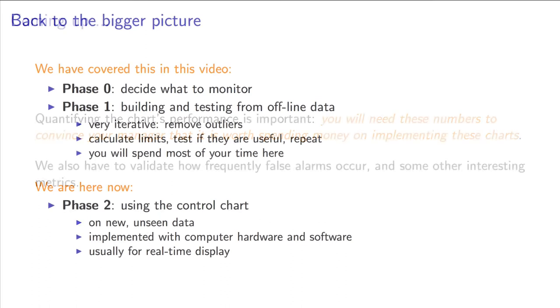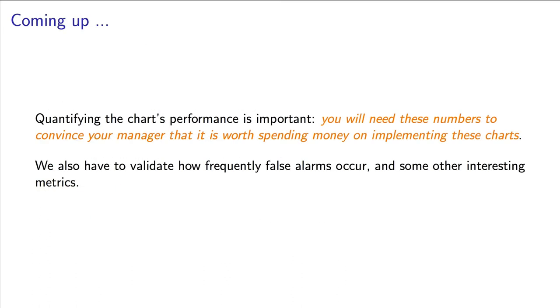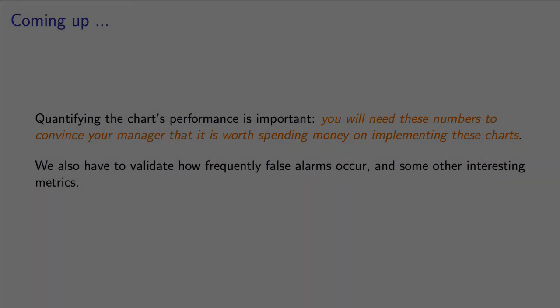Now in the next video, we're going to show how we can judge whether this chart performs well or not. How many times do we get a false alarm? How many times does the opposite occur when the process is actually behaving badly, but we're still showing data within the limits? Neither of these situations is desirable, but how do we quantify that? We'll see that next. I'll see you next time.